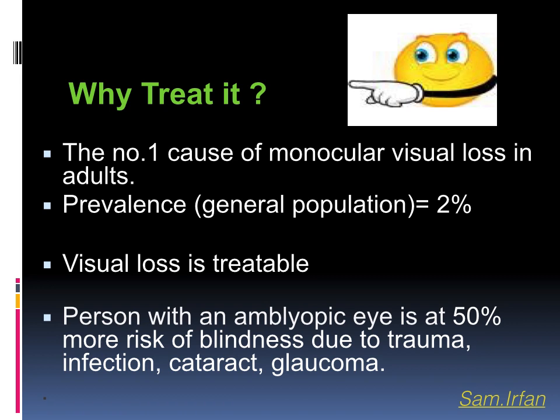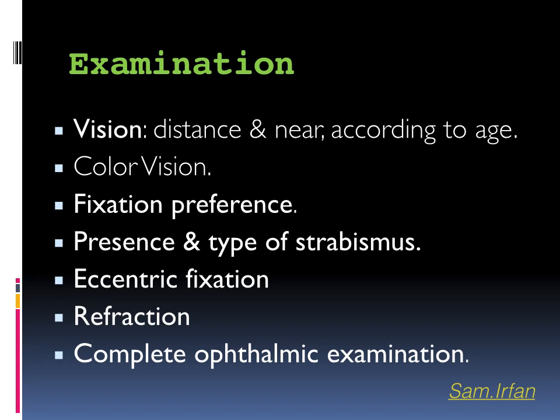Since the visual loss is treatable, why not treat it? A person with a lazy eye is prone to blindness in the good eye from trauma, infection, cataract, or glaucoma — so why not attempt to give them two good eyes? How to approach a patient with amblyopia: the foremost step is to record visual acuity. There are various methods of recording vision according to the age of the patient. If there is a difference of two lines of visual acuity between the two eyes, this is labeled as amblyopia. The pattern of fixation preference identifies the dominant eye.